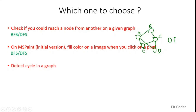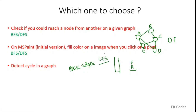To detect a cycle in a graph, DFS is usually preferred because of the concept of back edges. If in a recursion stack you reach a node that is already present in the recursion stack, that means the graph has a cycle. The back edges concept applies more naturally to DFS because it uses a recursion stack. However, there are also ways to detect cycles using BFS.